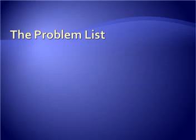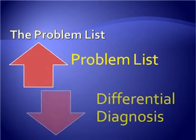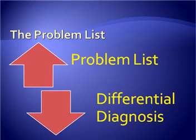Once you have identified all the problems, you can then begin to consider a list of possible differential diagnoses. The differential diagnosis should be documented after the problem list has been completed. There is no place on the problem list for your differential diagnosis.